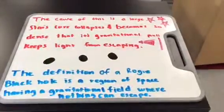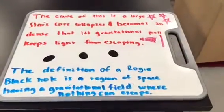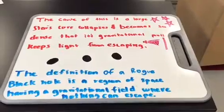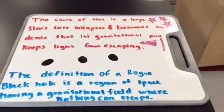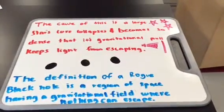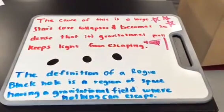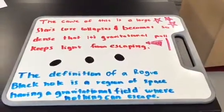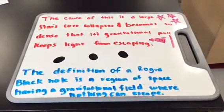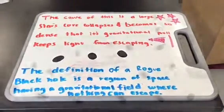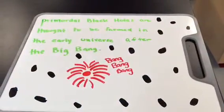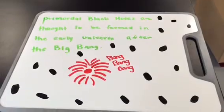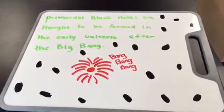A large star's core collapses and becomes so dense that its gravitational pull keeps light from escaping. The definition of a black hole is a region of space having a gravitational field where nothing can escape. Primordial black holes are thought to have been formed in the early universe after the Big Bang.